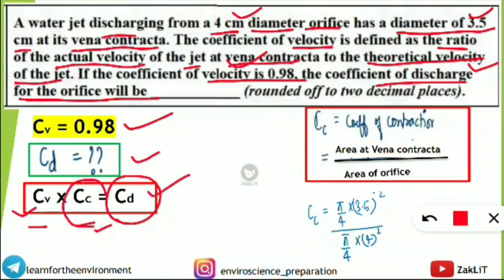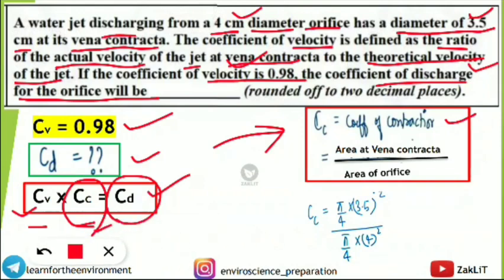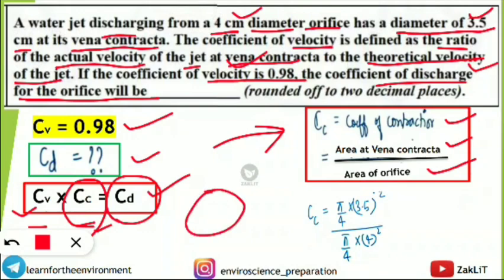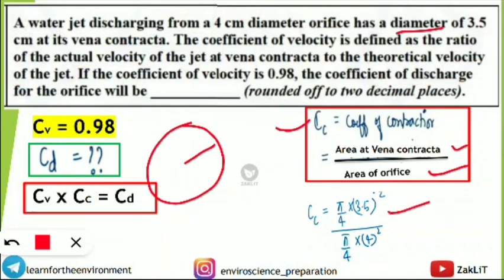We have cv and need cd, but cc is unknown. However, we can find cc using another formula: cc (coefficient of contraction) = area at vena contracta ÷ area of orifice. Since these are circular, we use area = π d²/4. For the vena contracta: π × (3.5)² / 4, and for the orifice: π × (4)² / 4.